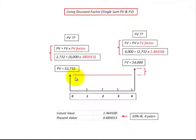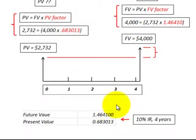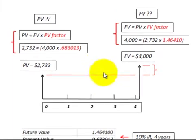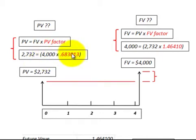Here we're going to look at the cash flows where we've got a present value and a future value with four years between them. We determine our discount factors — either taken from a financial table or calculated — based on a 10% interest rate over four years. To determine the present value, we'd take the future value at the end of year four and multiply it by the present value factor: $4,000 times the factor gives us $2,732 for the present value.